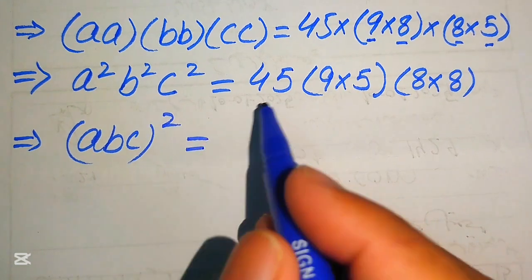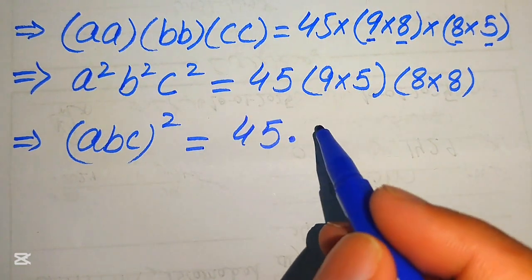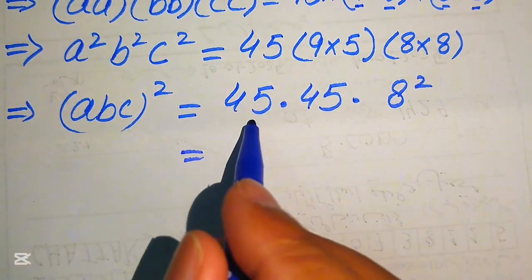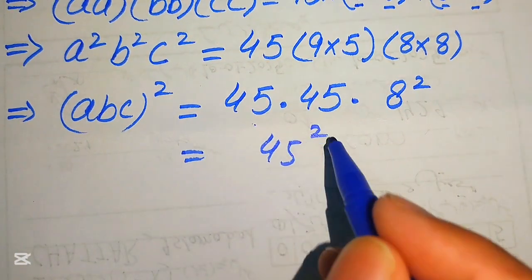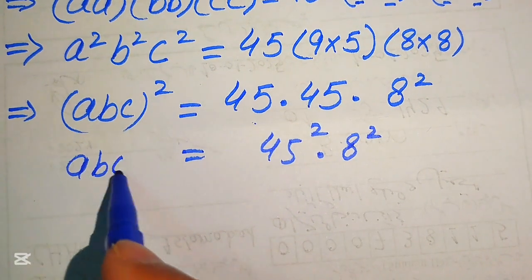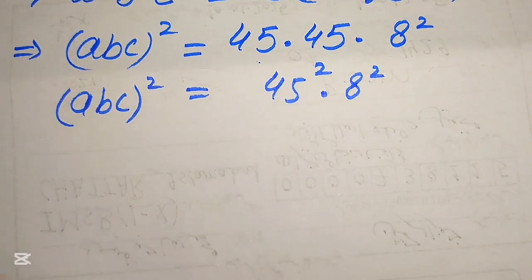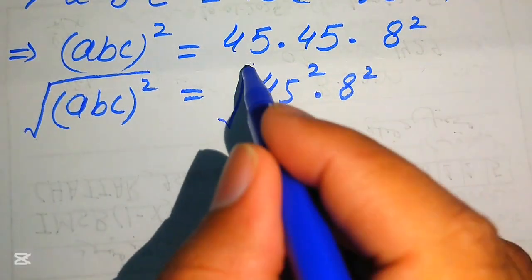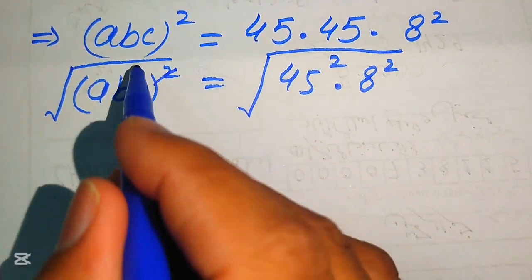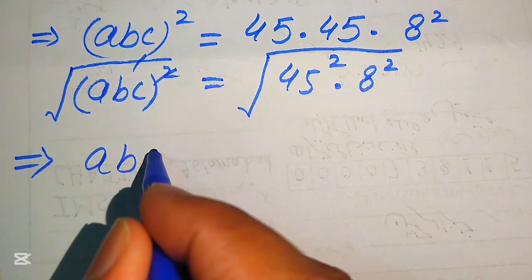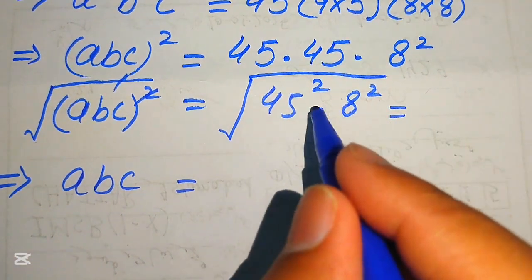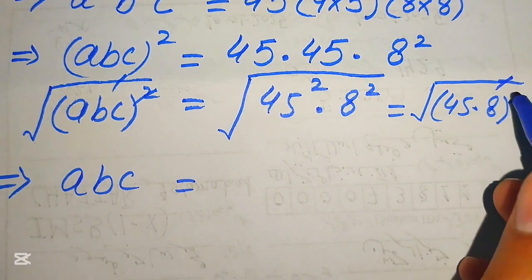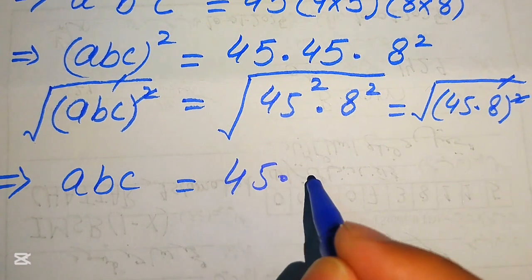So we have (ABC)² equals 45 multiplied by 9 times 5 — which is again 45 — multiplied by 8 squared. That gives (ABC)² = 45² × 8². To find A, B, C we take the square root on both sides. The square root and the square cancel, giving ABC = 45 multiplied by 8.